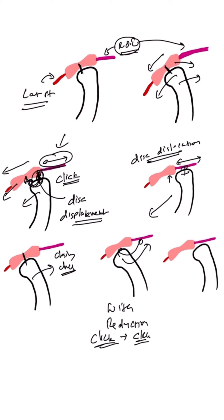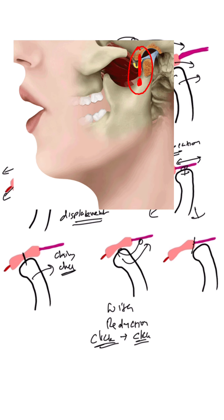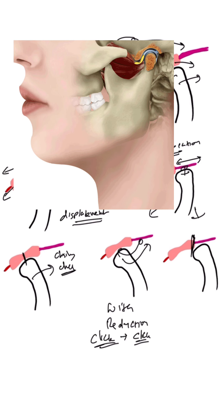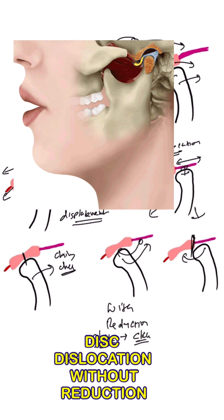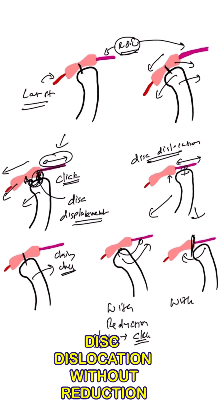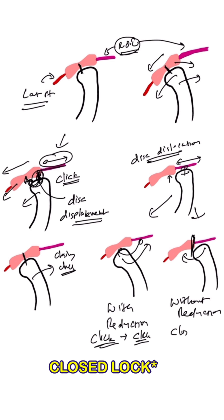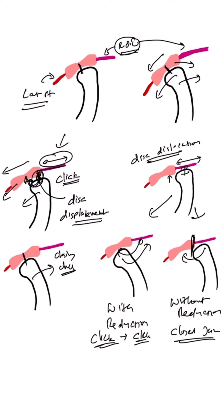There is another scenario where the condyle is locked posterior to the articular disc and is not able to translate to the central portion. This is known as disc dislocation without reduction. This is also known as closed jaw. Here, the patient is not able to open the mouth fully because of this block. These are the types of disc displacement and disc dislocation.